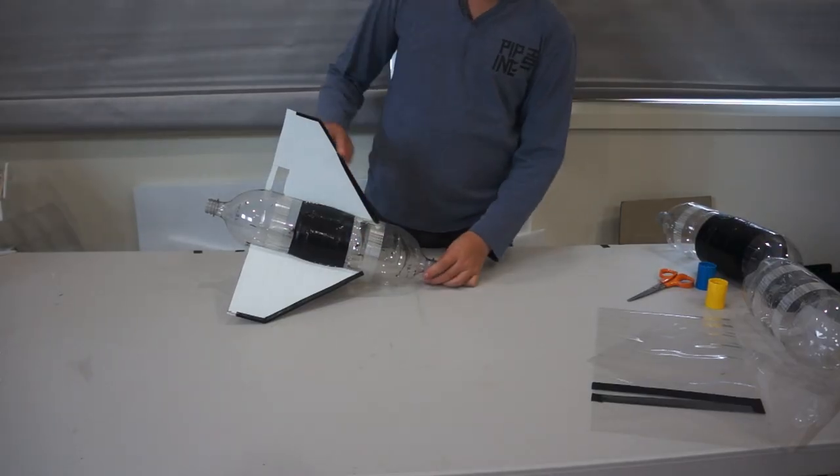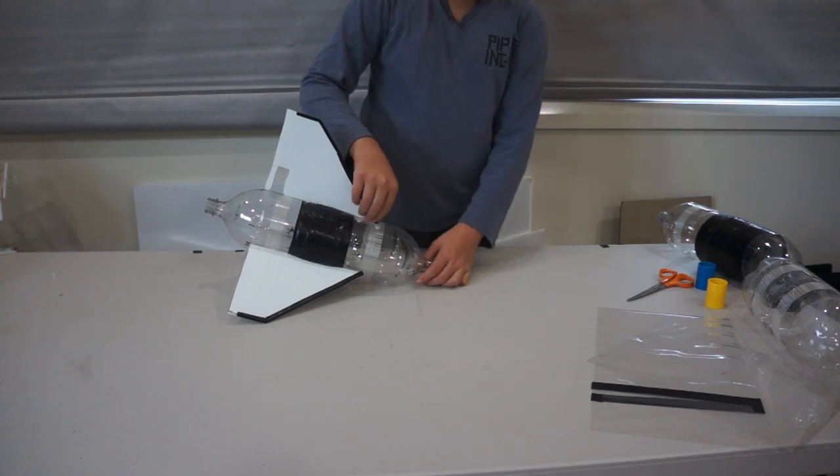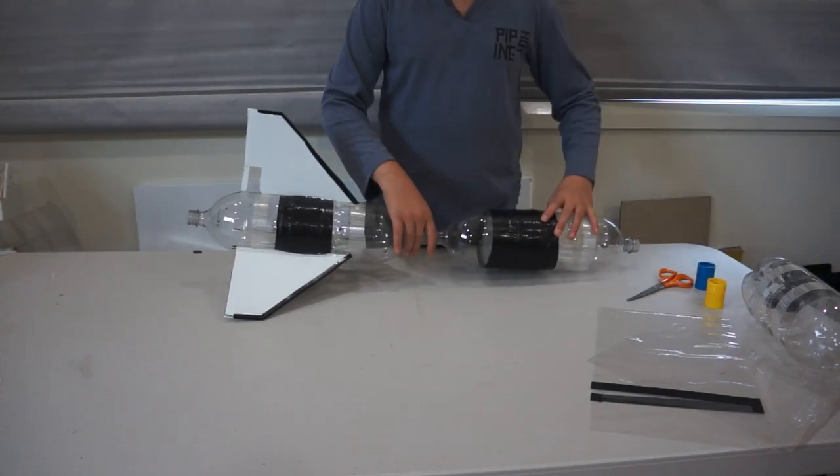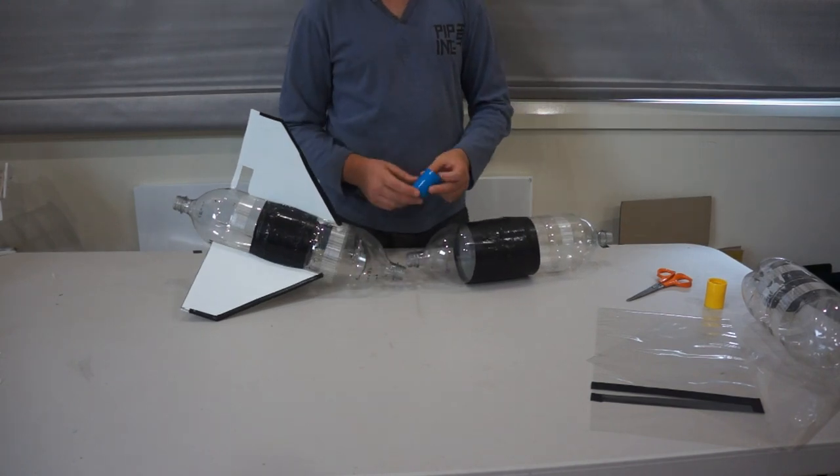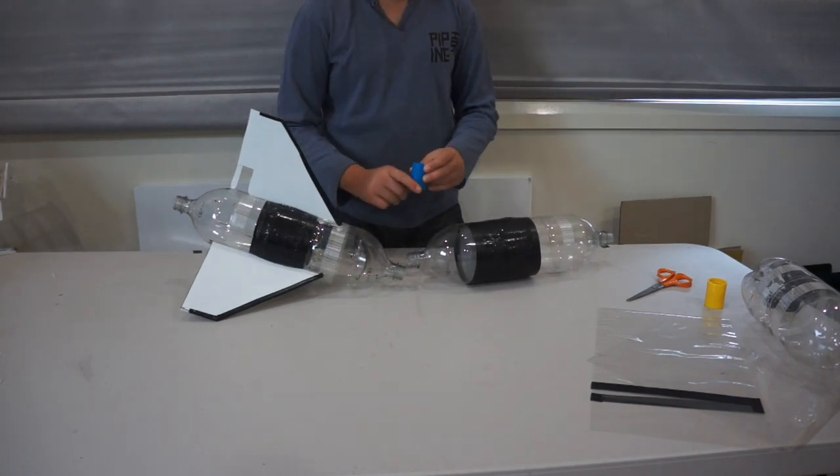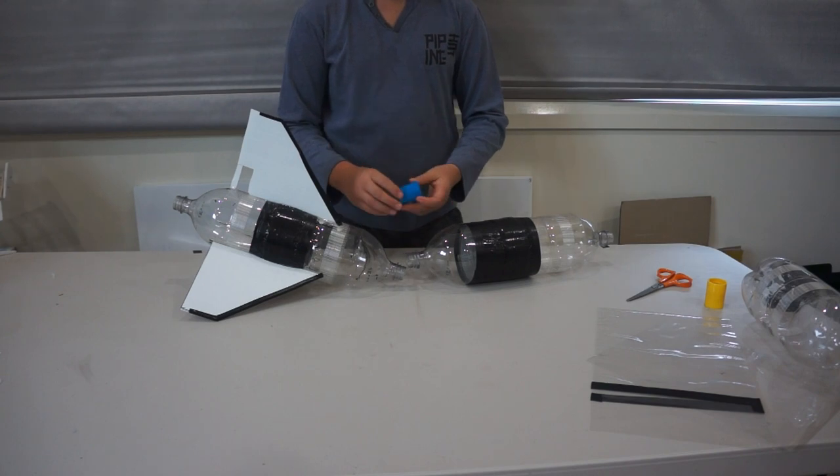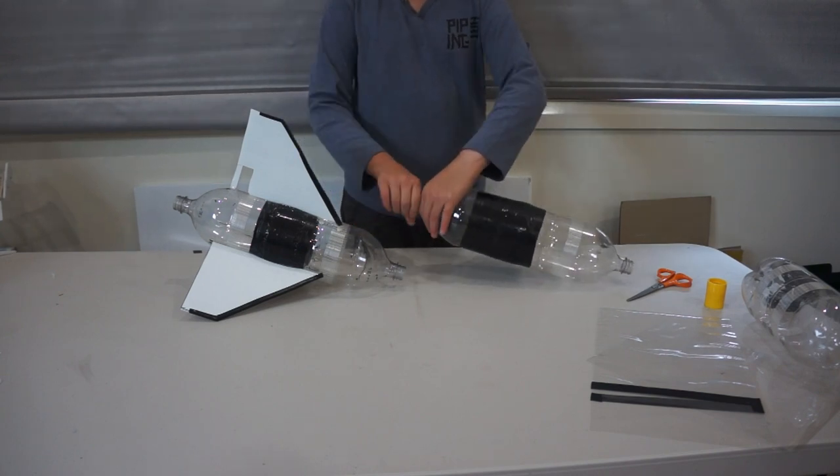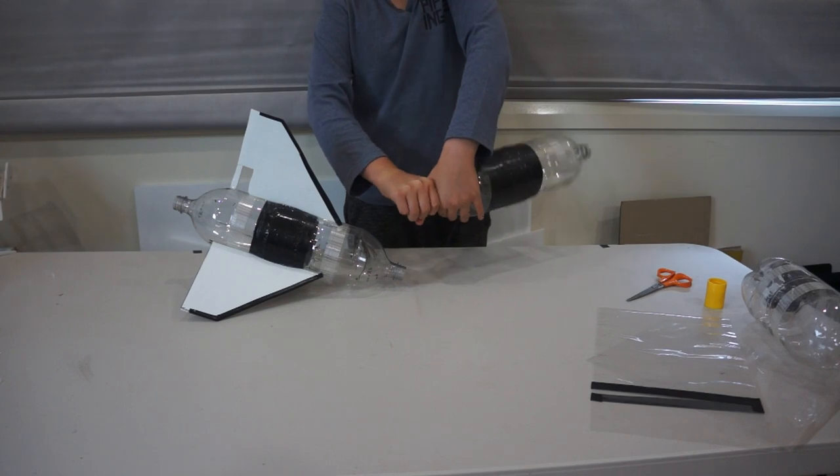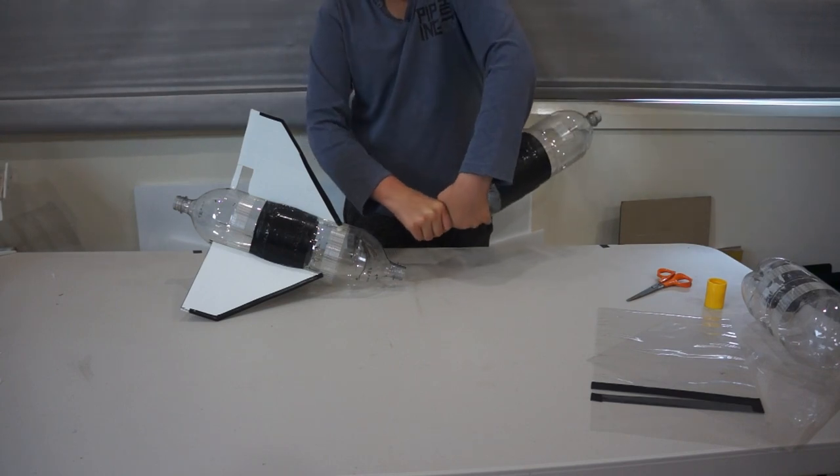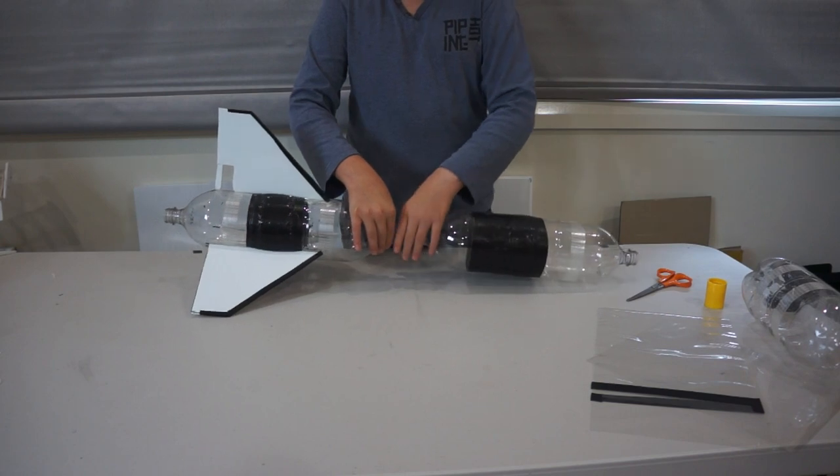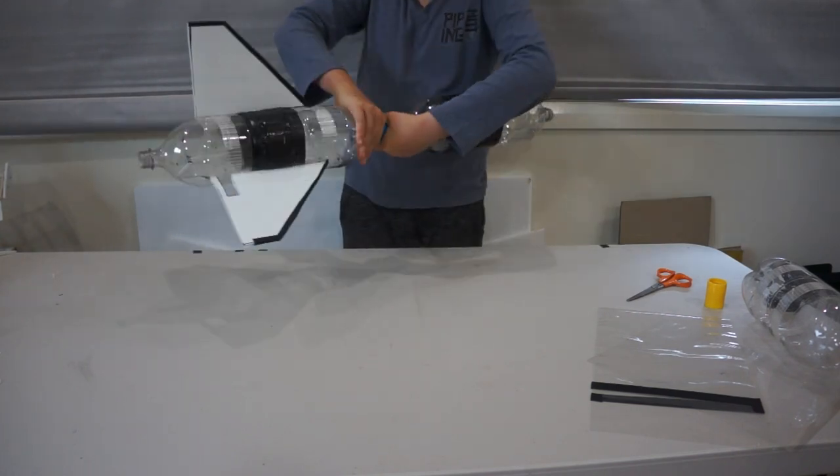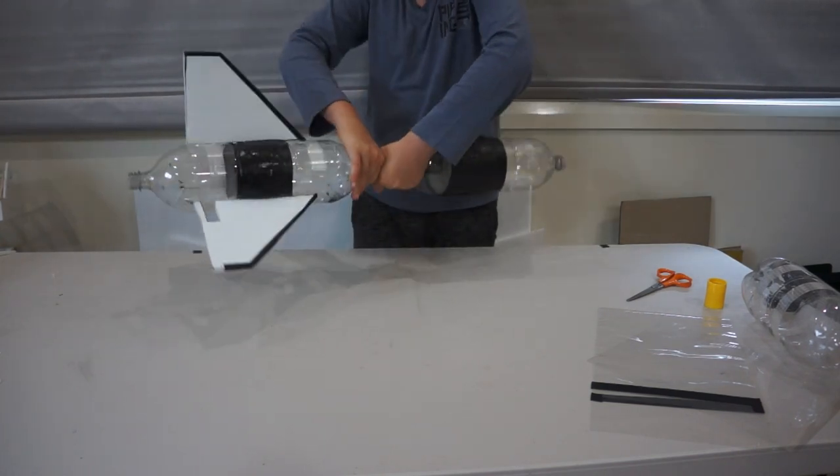So once the tape is on and the glue has cured, it's time to screw the bottles together. Now I'm using tornado tubes, but if you can't get them anywhere, I'll show you how to make them in a future video. So screw them under the bottle and tighten it up so no air or water leaks out. And then do the same to the other one. Nice and tight.